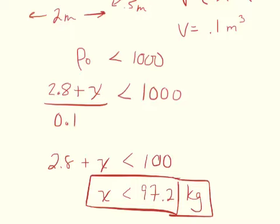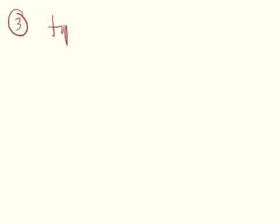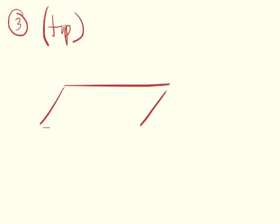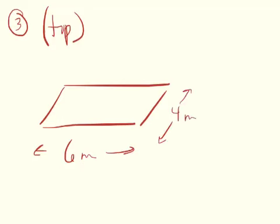Number 3 on the same page. A ferry boat is 4 meters wide and 6 meters long. Please write down givens and maybe draw a diagram. It's 6 meters long and 4 meters wide — that's all that's given so far.